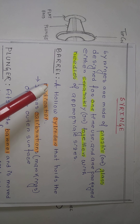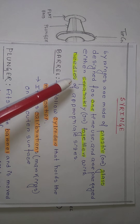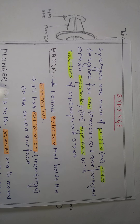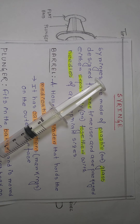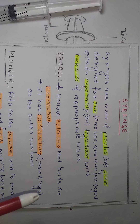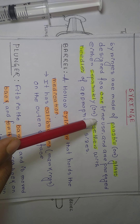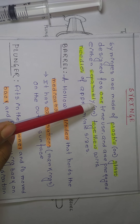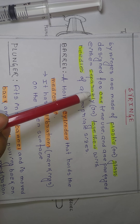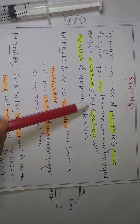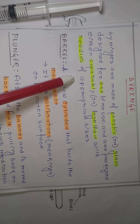There is a definition of syringe. Syringes are made of plastic or glass. Designed for one time use — that is very important, use and dispose, single use. We have to use the syringe one time only. And syringes are packed either separately or together with needles, in an appropriate size.